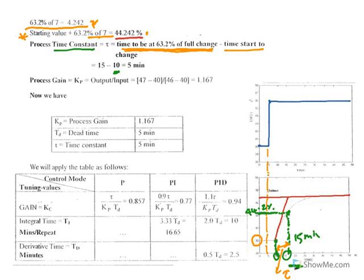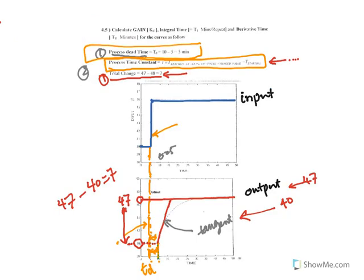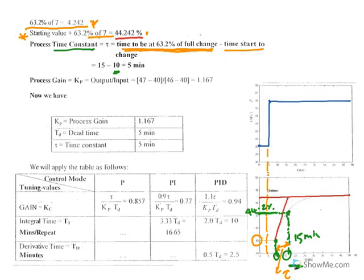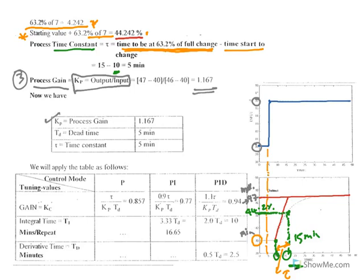The third parameter is the process gain. We have found the dead time and the time constant. The process gain KP equals the change in output over the change in input. The maximum output is 47, minimum is 40, so the change in output is 7. The change in input is 46 minus 40 equals 6. So KP equals 7 over 6, which is approximately 1.17. Now you have process gain, dead time, and time constant — you can apply the open-loop tuning table.